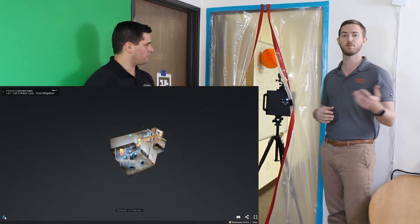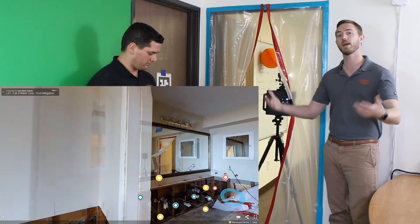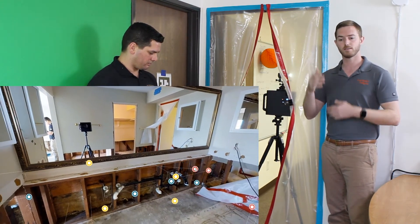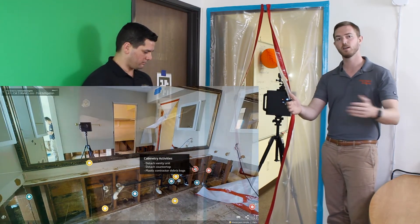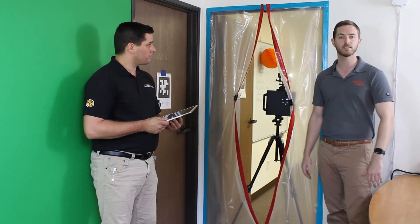Post-mitigation is after all the demo and damage has been done by the contractor mitigating the claim. It's important to have that post-mitigation scan so you know exactly what it looked like, what was done, so you can estimate what it takes to put it all back together.